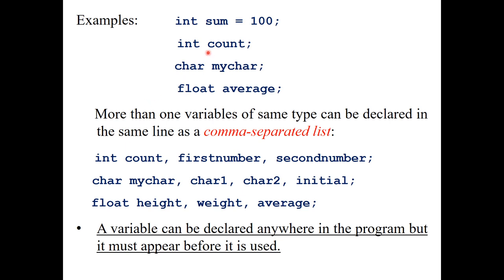If you have more than one integer variable in your program, you can define them like: 'int count, first_number, second_number;'. Remember, semicolon is an integral part of all C++ statements. Similarly, if you have several character variables, you can write 'char my_char, char1, char2, initial;' — all of type character. And 'float height, weight, average;' are all real numbers. A variable can be declared anywhere in the program, but it must appear before it is used.